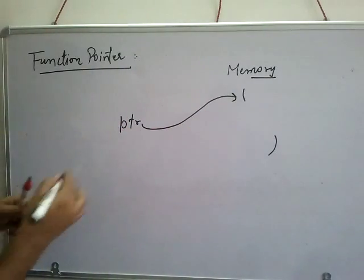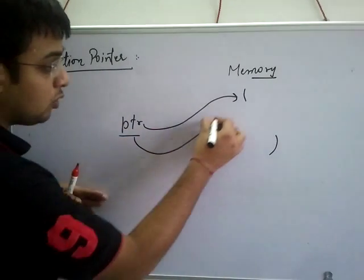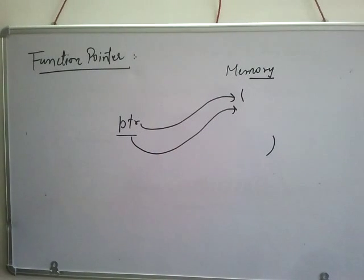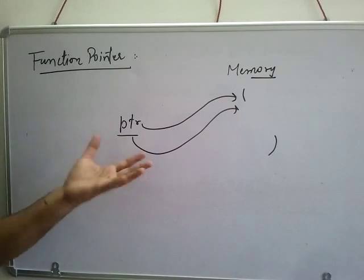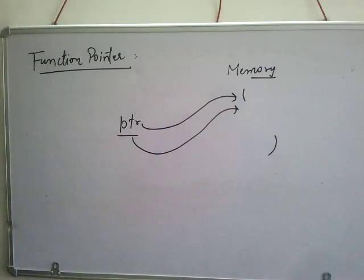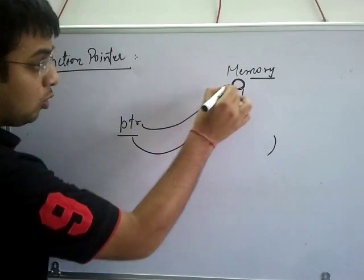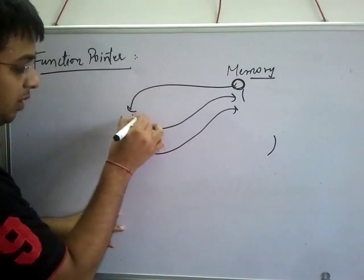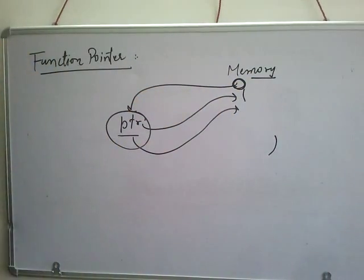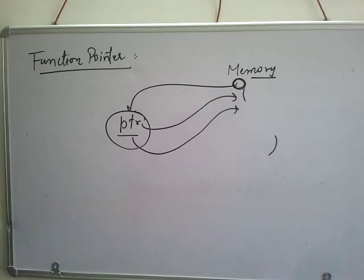Can a pointer refer to this function, and then can I call this function using the pointer? Is this possible? Does C provide this facility? Obviously yes, because our function is stored at some starting address in memory, and we can point a pointer to that starting address. So this is the concept behind this lecture.